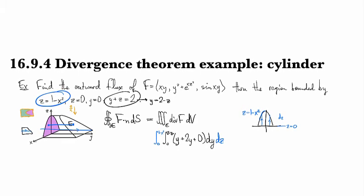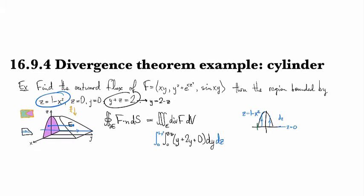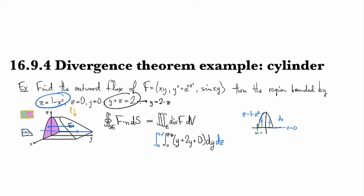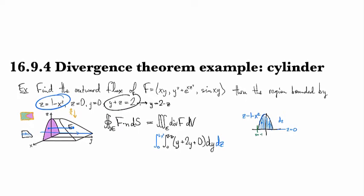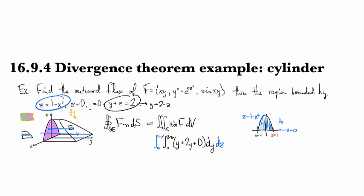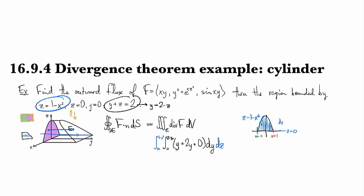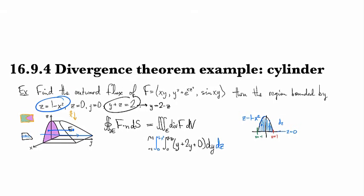Then we figure out where we get our slices — the first one at x equals minus 1, slicing through, and the last one at x equals 1. So we're going from minus 1 to 1 dx.